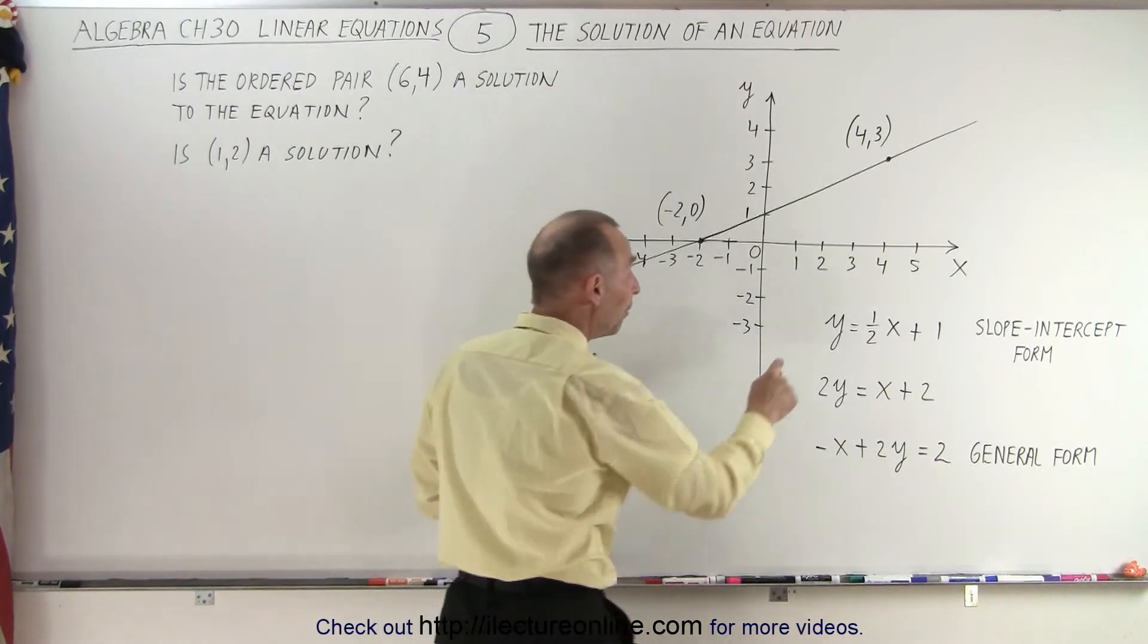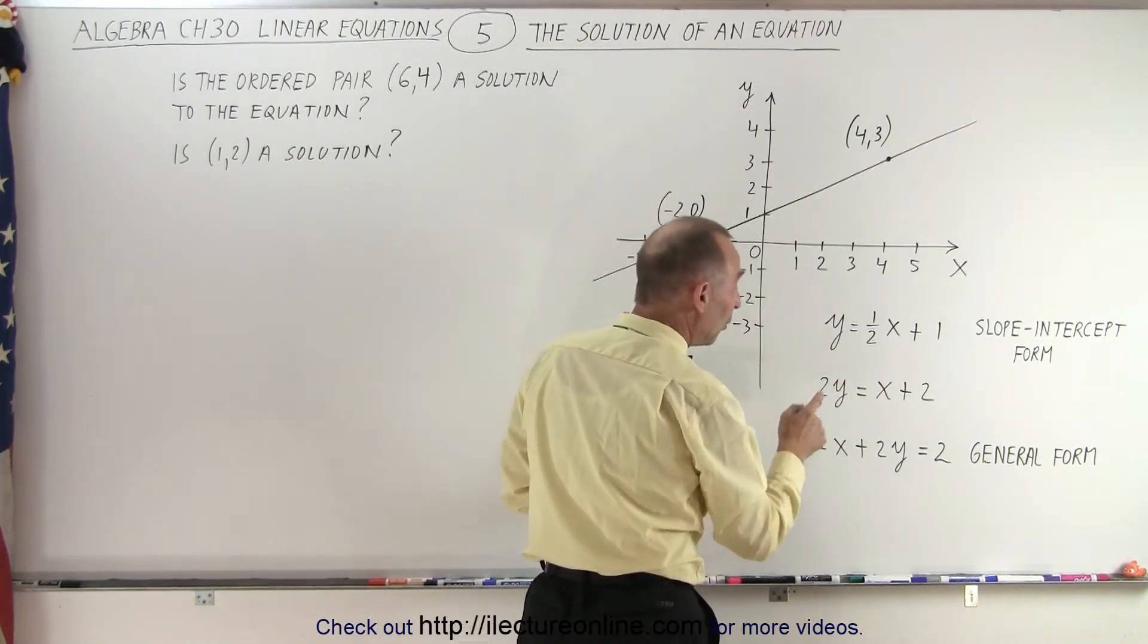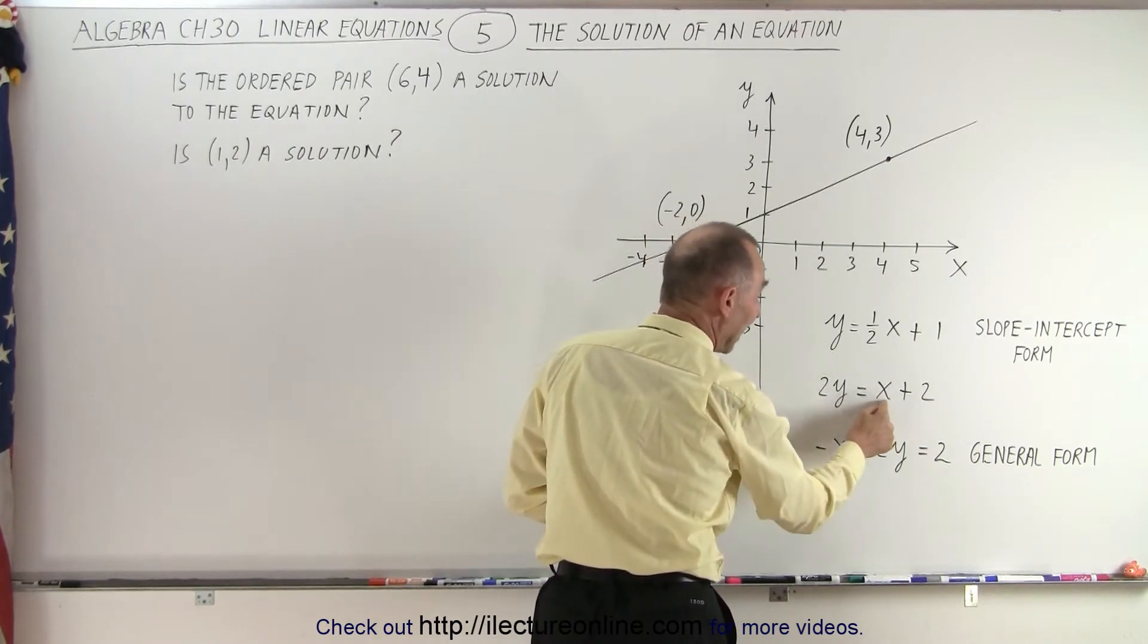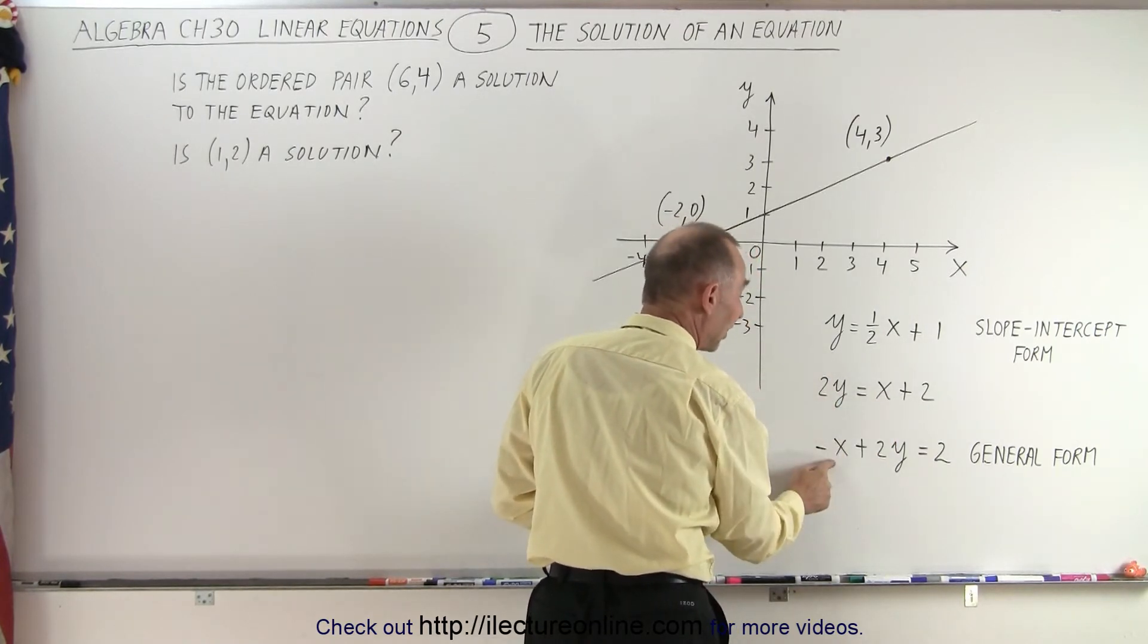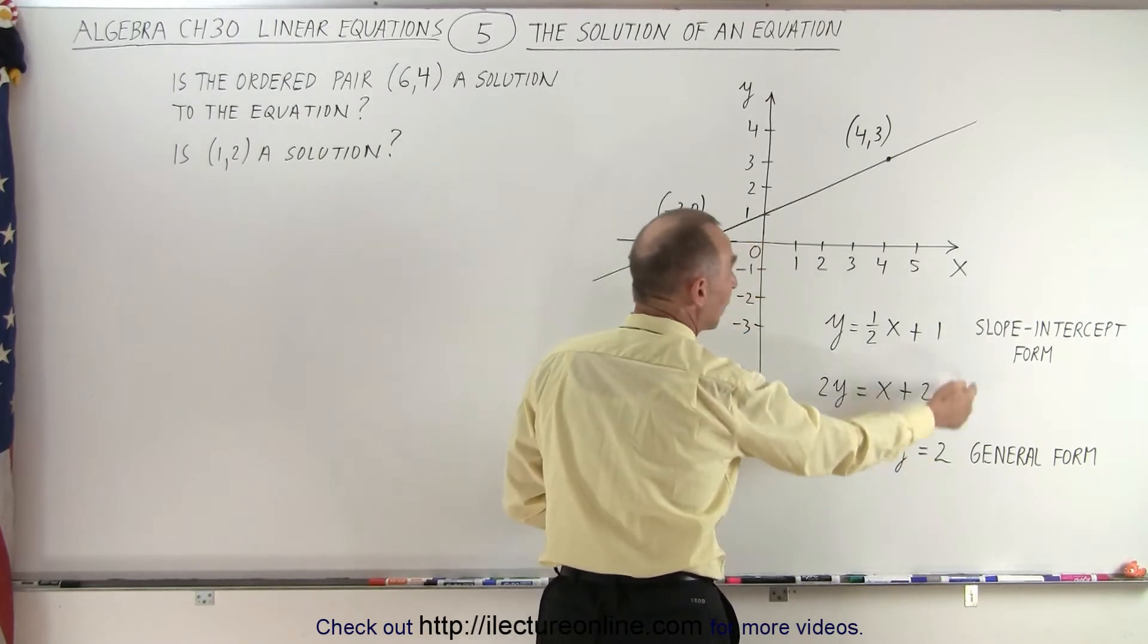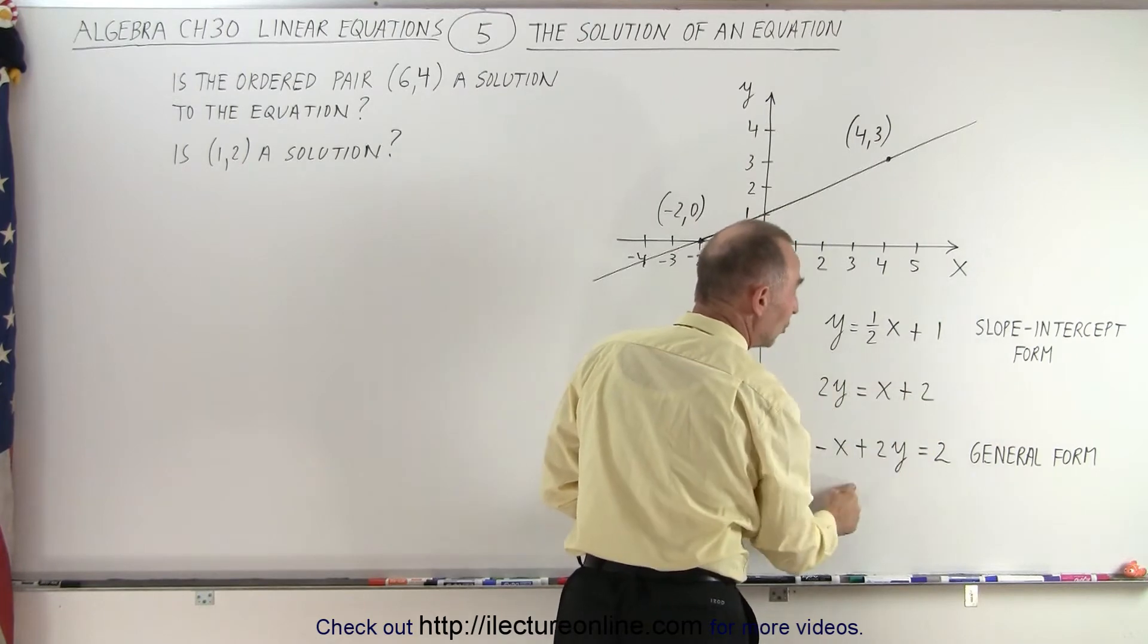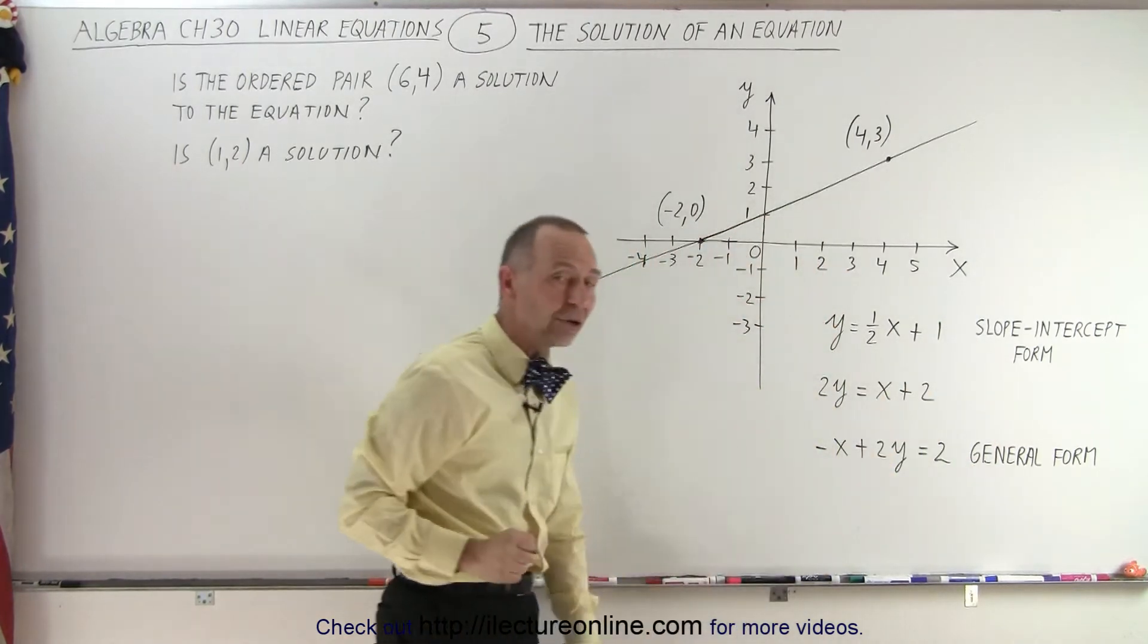Now, if we multiply both sides of the equation by 2, then we get 2y = x + 2. And then if we take the x and move to the left side, we get -x + 2y = 2. We now turn the equation representing this line from the slope-intercept form into the general form of that linear equation.